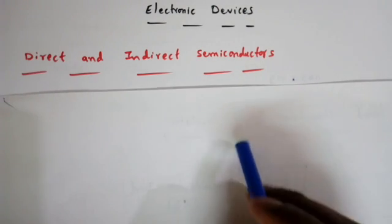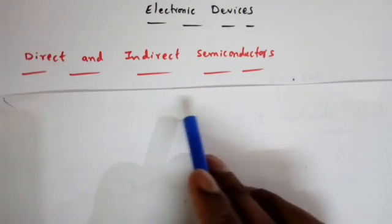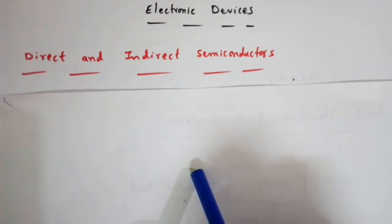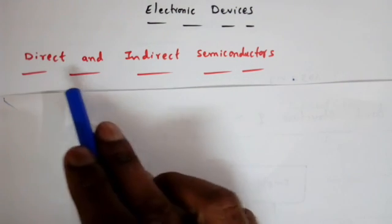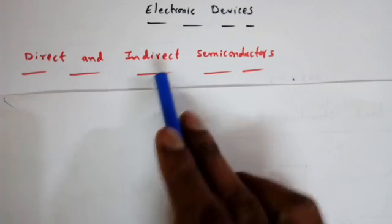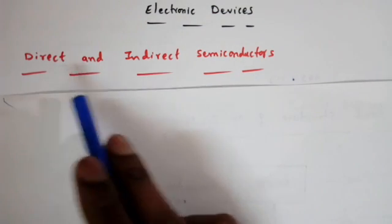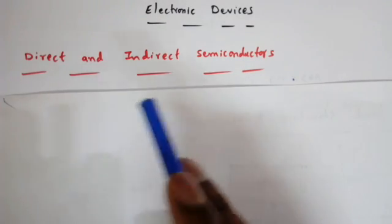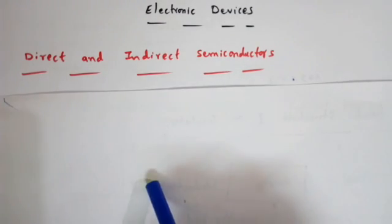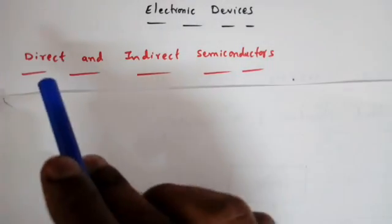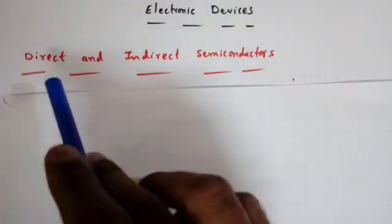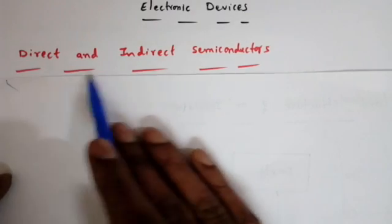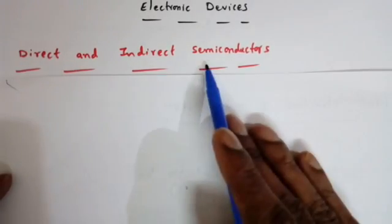In this lecture, I'll discuss the first classification of semiconductors based on its energy band structure versus the propagation constant — that is, direct bandgap semiconductors and indirect bandgap semiconductors, or we can simply say direct semiconductors and indirect semiconductors. Based on this concept, we may get questions in the GATE exam, so they may ask which semiconductor belongs to the direct or indirect bandgap group.